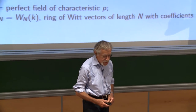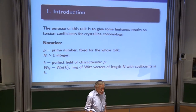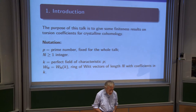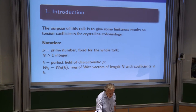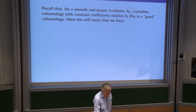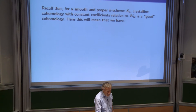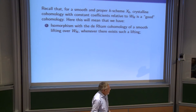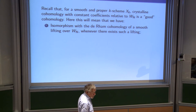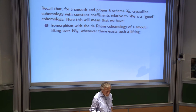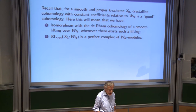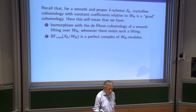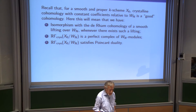The notations for the introduction are as follows: p is a prime number, n is an integer, we work mod p^n, k is a perfect field of characteristic p, and W_n denotes the Witt vectors of length n with coefficients in k. We have crystalline cohomology for proper and smooth varieties over k with respect to W and W_n, and it is a good cohomology, which for us means three things.